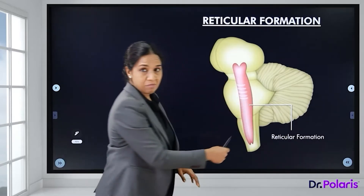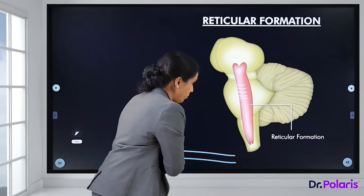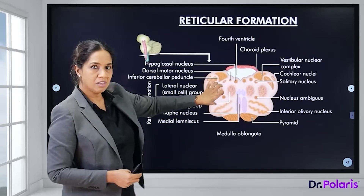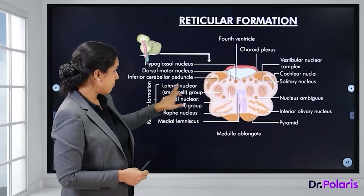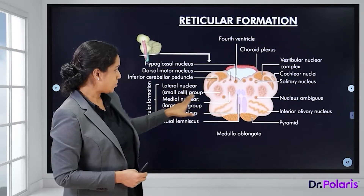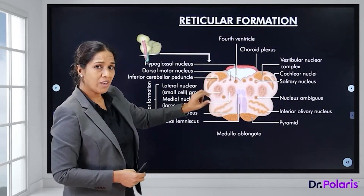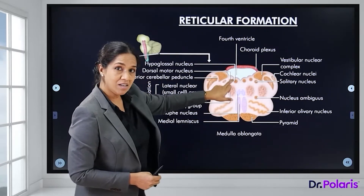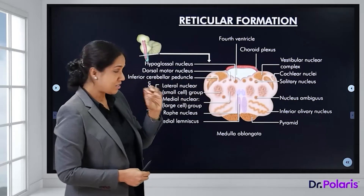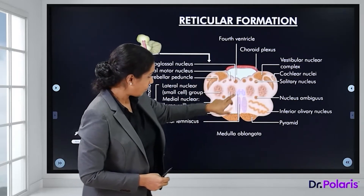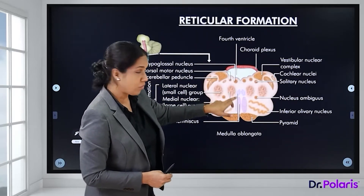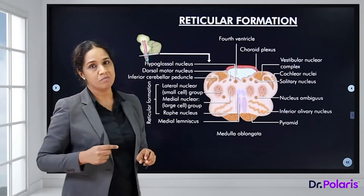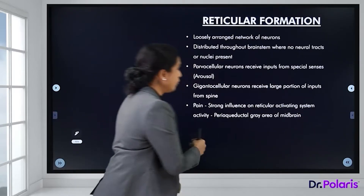There are three columns that make up the reticular formation: the midline raphe nuclei, the medial nuclear group, and the lateral nuclear group. The lateral nuclear group contains very small cells, the medial group has larger diffuse cells, and the raphe nucleus is the purple-colored structure.